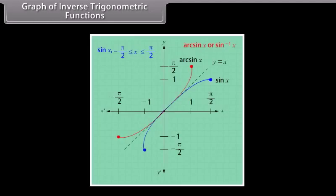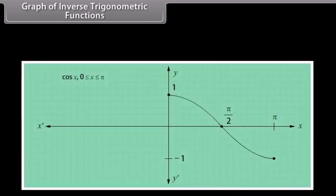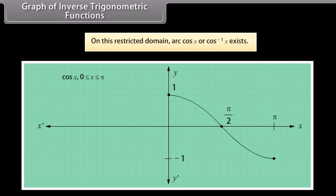Using this idea of rotation and by plotting some points, we see the graph of arc sin x. The derivations of the graphs of arc cos x and arc tan x are similar to that of arc sin x. In both instances, intervals must be restricted. For arc cos x, we use the [−1, 1] piece, and on this restricted domain, arc cos x or cos⁻¹x exists.